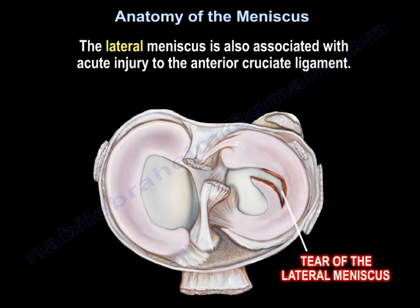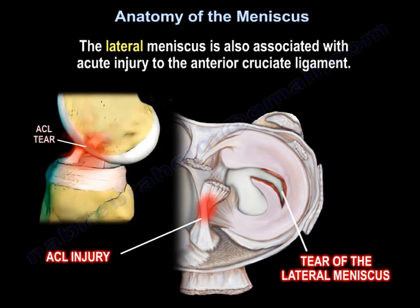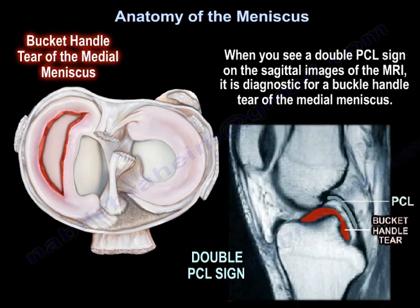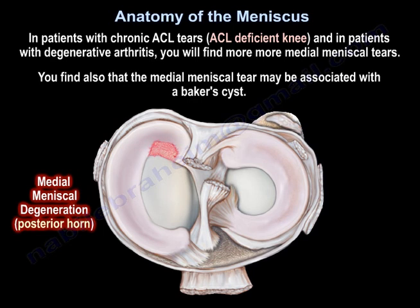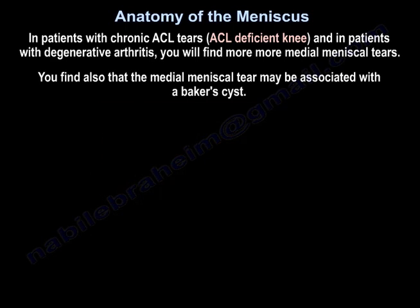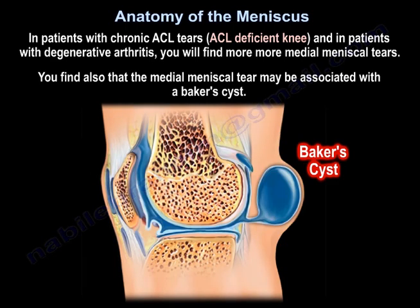The lateral meniscus is associated with acute injury to the anterior cruciate ligament. When you see a double PCL sign on sagittal MRI images, it is diagnostic for a bucket handle tear of the medial meniscus. In patients with chronic ACL tears and degenerative arthritis, medial meniscus tears are more common, and a medial meniscus tear may also be associated with a Baker's cyst.